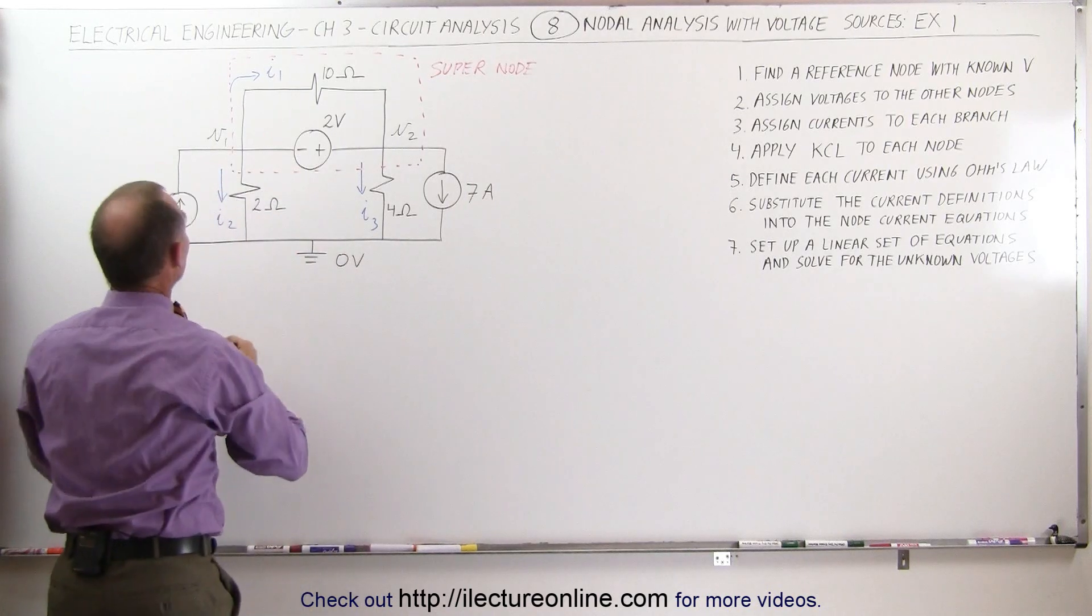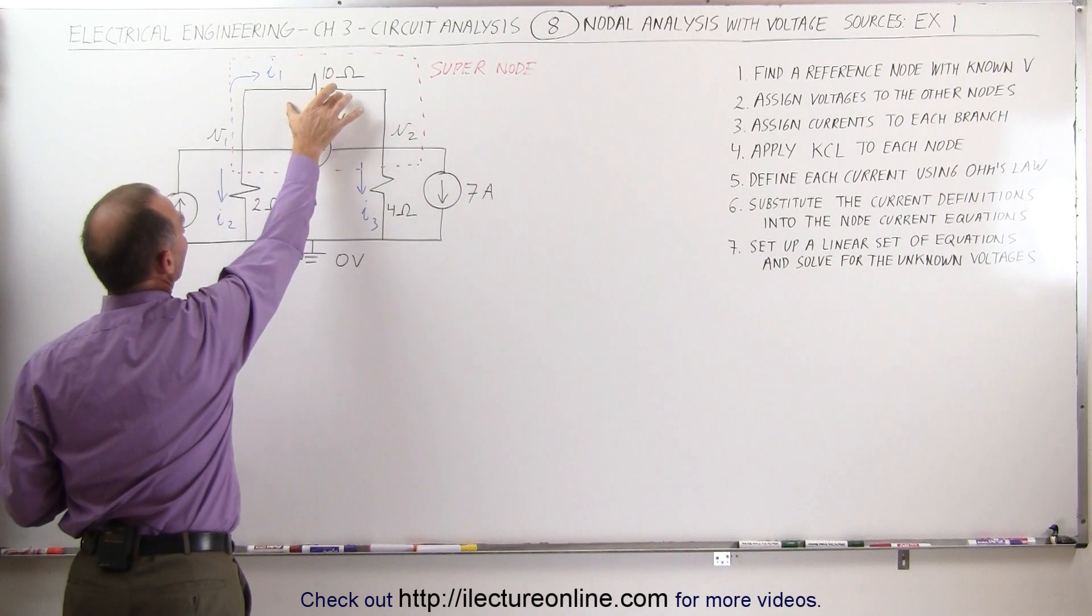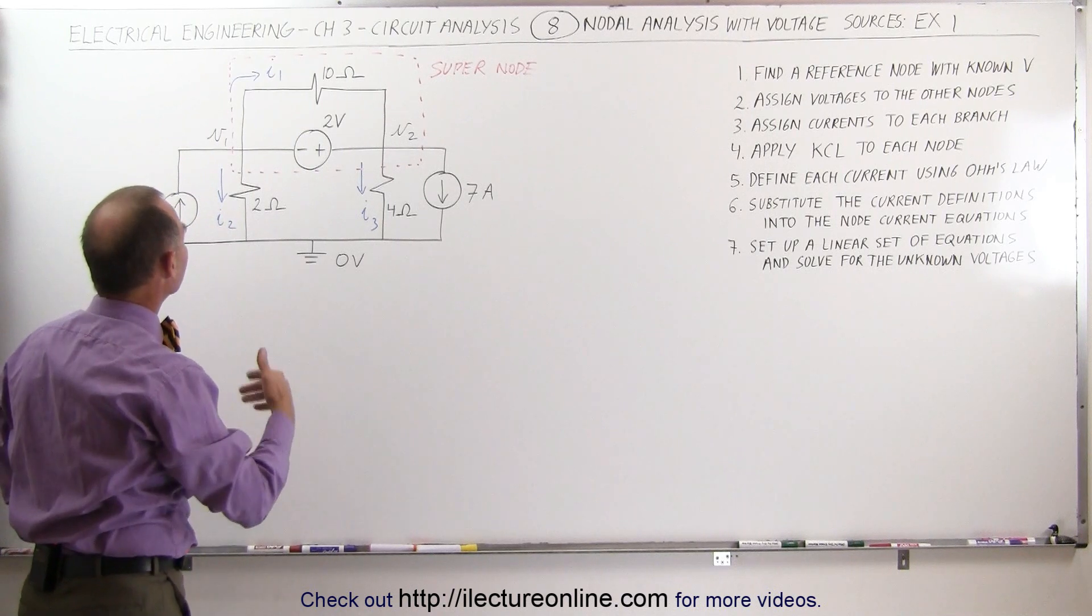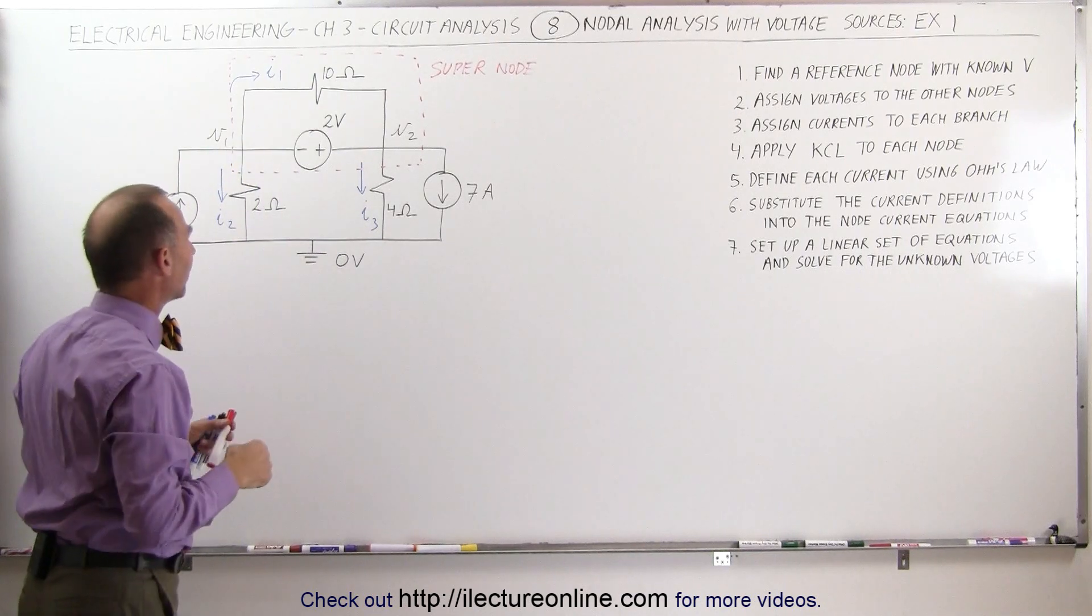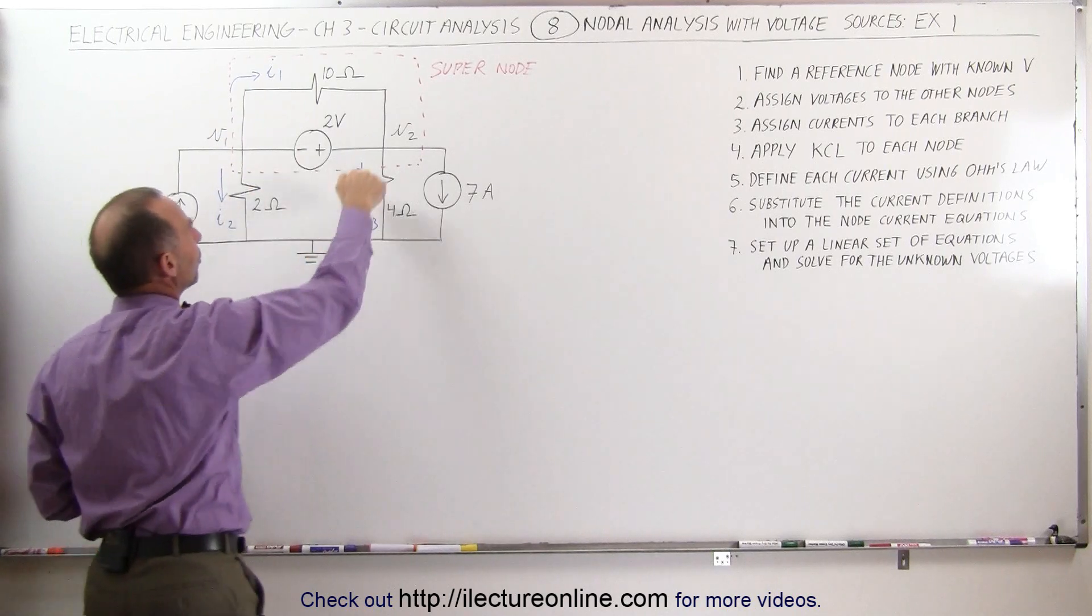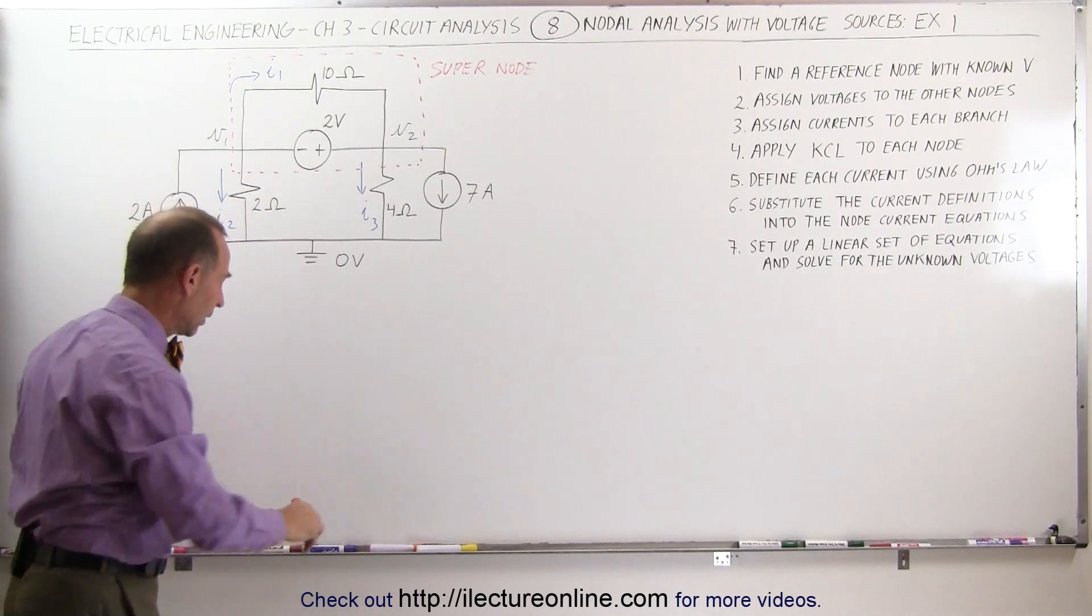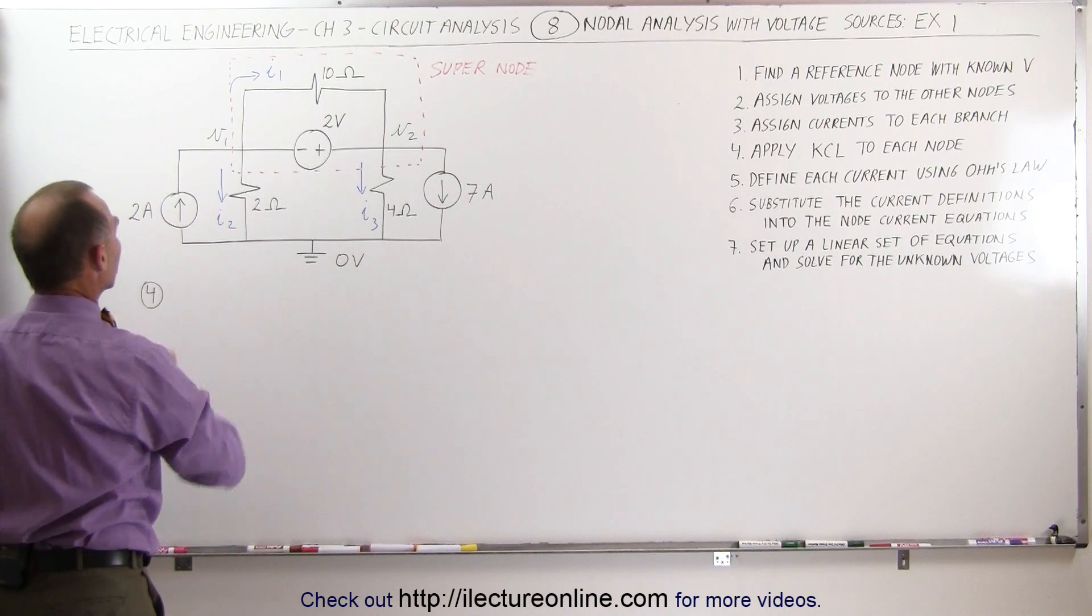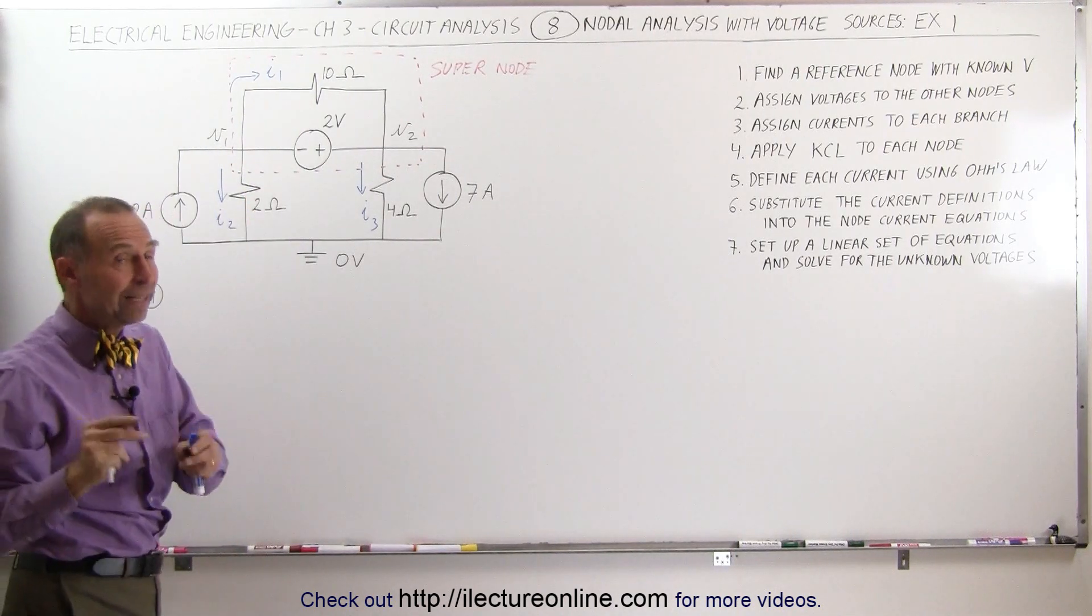That super node includes the node at V1, the node at V2, the voltage source, the resistor here, the 10 ohm resistor, and the current I1. If we do that, we now have something slightly different. We have one node, and we have current going in and current coming out. We have 2 amps coming into the super node, we have I2 coming out of the super node, we have I3 coming out of the super node, and we have the 7 amp coming out of the super node as well.